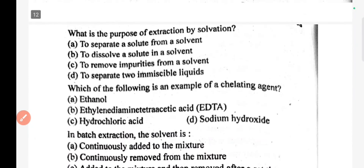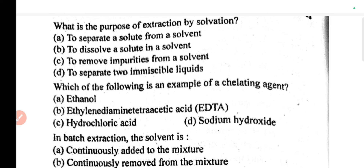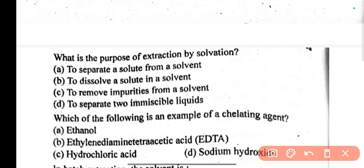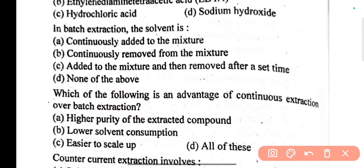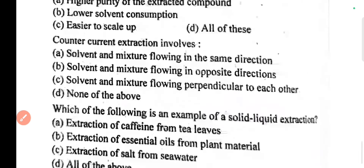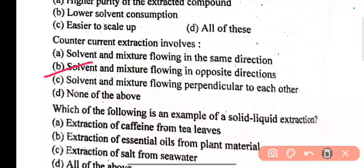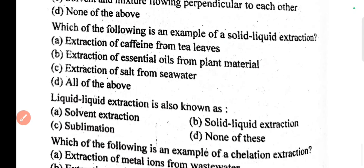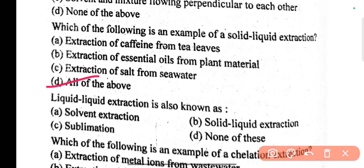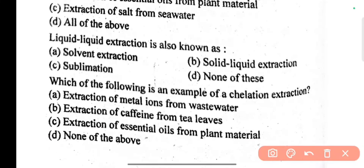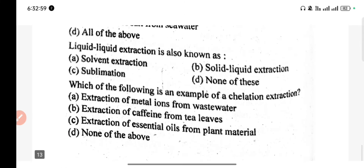What is the function of the detector in mass spectroscopy? The correct answer is D. What is the purpose of solvent extraction? The correct answer is B. Which of the following is an example of a chelating agent? The correct answer is B. In batch extraction, the solvent is used directly. What is the advantage of continuous extraction over batch extraction? Counter-current extraction involves solvent and mixture flowing in opposite directions. Which of the following is an example of solid-liquid extraction? D is the correct answer. Liquid-liquid extraction is also known as solvent extraction. Which of the following is an example of chelation extraction? The correct answer is A: extraction of metal ions from waste matter.